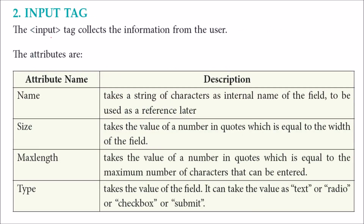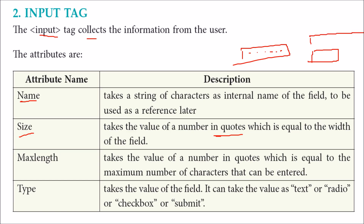The input tag is where actual data is collected from the user. The name attribute is the internal name of the field that will be used when the data is submitted. The size attribute takes a number value equal to the width of the input field — a larger size means a wider box. The maxlength attribute defines how many characters a user can enter; for example, a size of 50 but a maxlength of 20 means the user can only type 20 characters. The type attribute allows options like text, radio for selections, and submit for form submission.